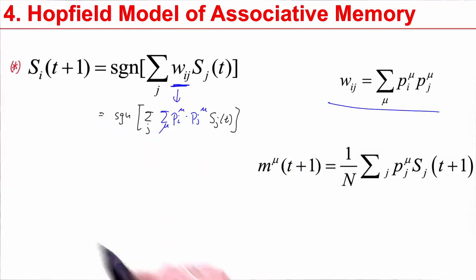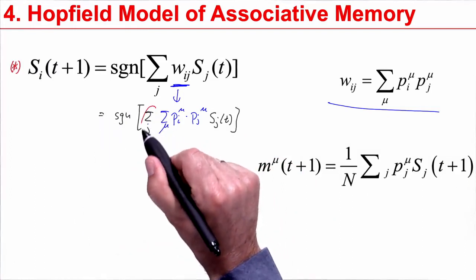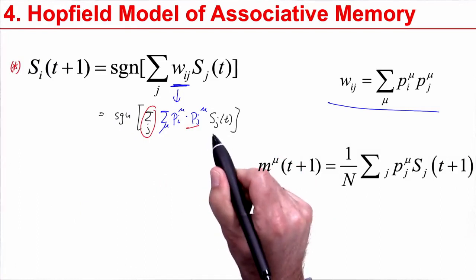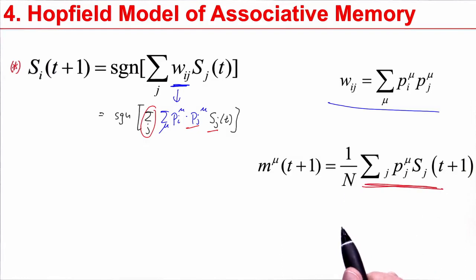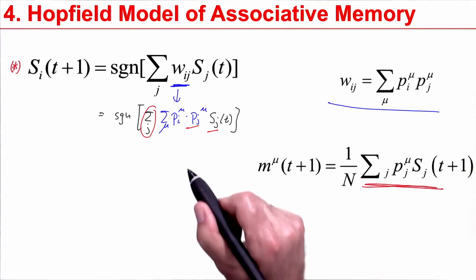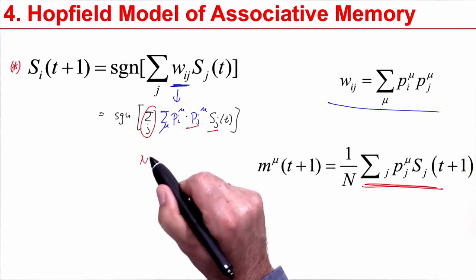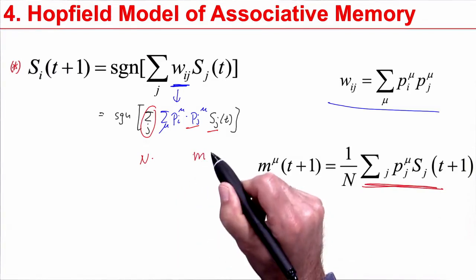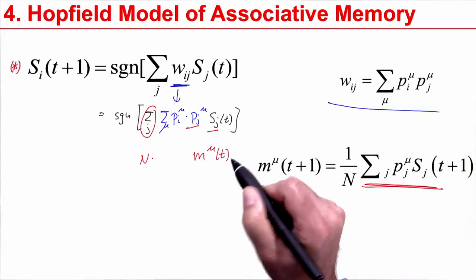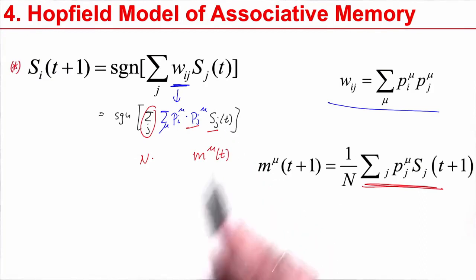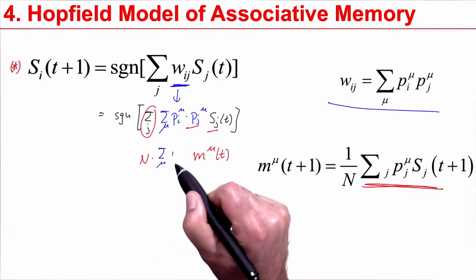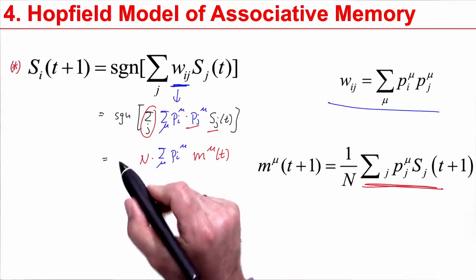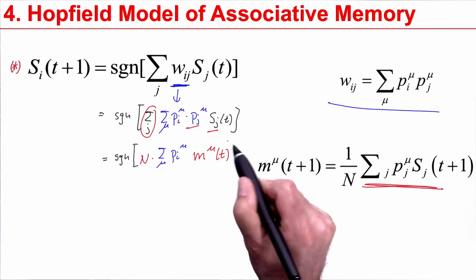But now something interesting happens. Look at this sum over j, pj, sj. That's exactly what we had here, except for the factor n. Therefore, I can write this as n times m mu of t. It's the overlap at time t. For the rest, I copy what I had before: sum over mu, pi mu.